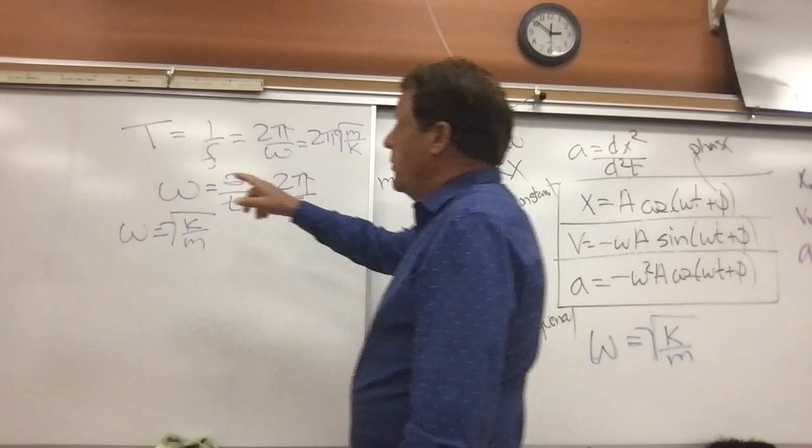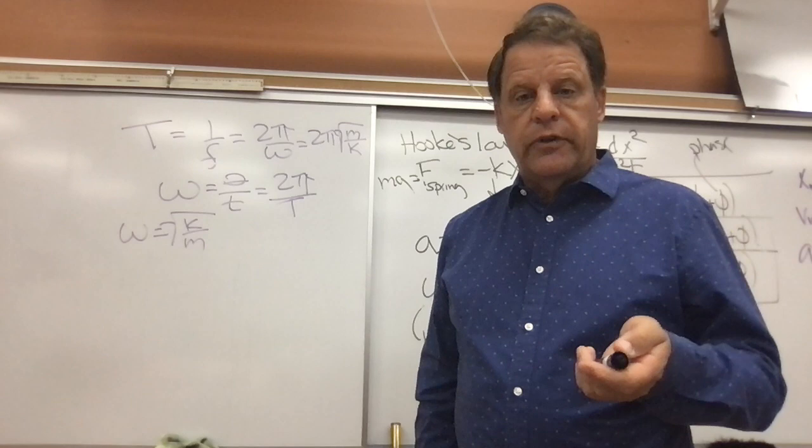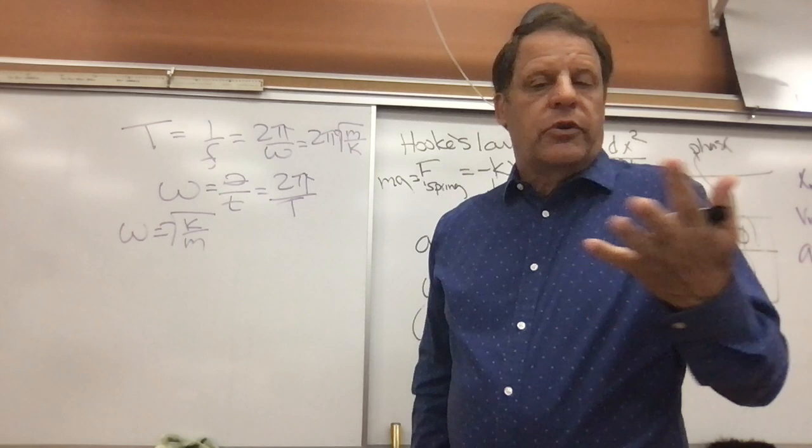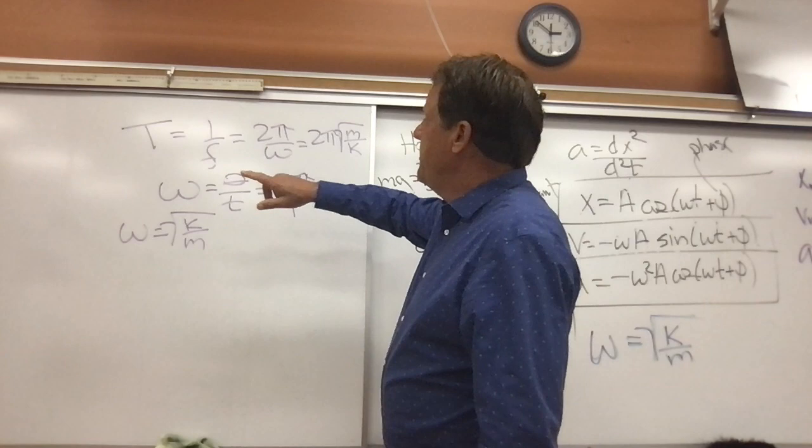Period is equal to one over frequency. Period is the time for one complete cycle. Frequency is the inverse of that — the number of cycles per second. The standard unit is cycles per second, which is seconds to the negative one, or hertz.